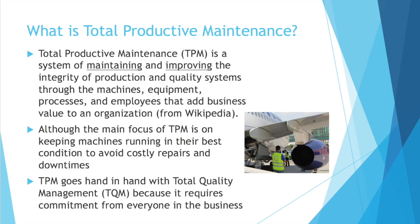So what is Total Productive Maintenance? Total Productive Maintenance, also known as TPM, is a system of maintaining and improving the integrity of production and quality systems through the machines, equipment, processes, and employees that add business value to an organization.